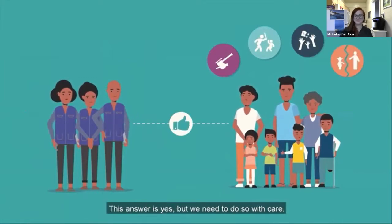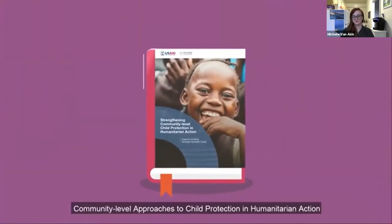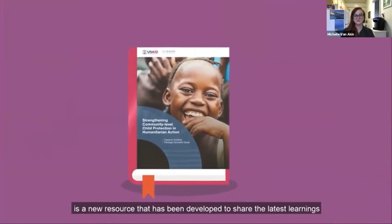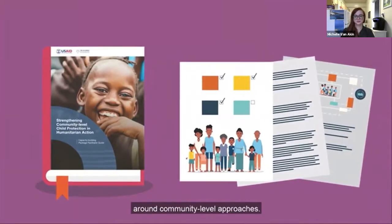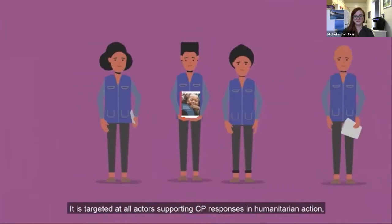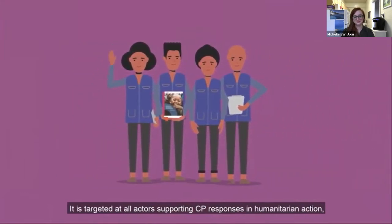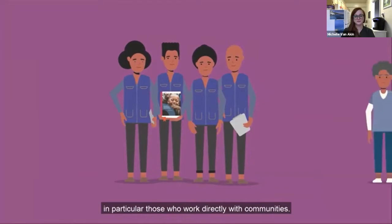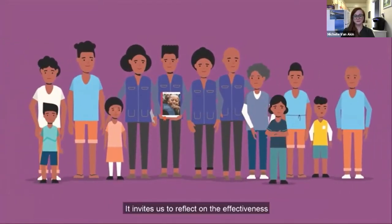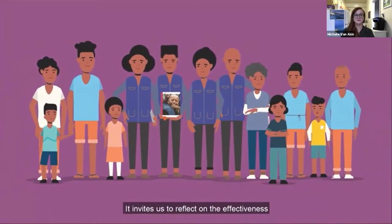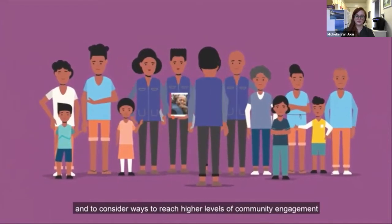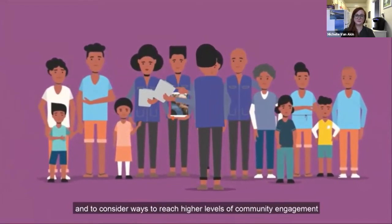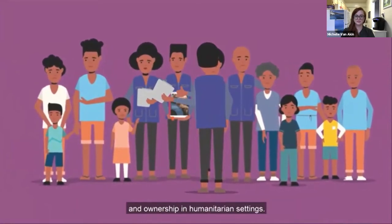The answer is yes, but we need to do so with care. The Reflective Field Guide — Community-Level Approaches to Child Protection in Humanitarian Action — is a new resource developed to share the latest learnings around community-level approaches. It is targeted at all actors supporting child protection responses in humanitarian action, particularly those who work directly with communities, inviting reflection on effectiveness, sustainability, and ways to reach higher levels of community engagement and ownership.